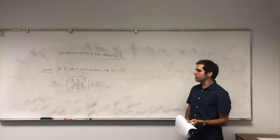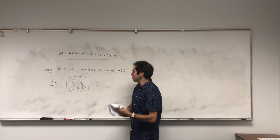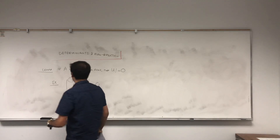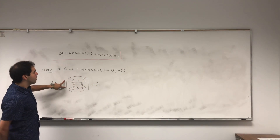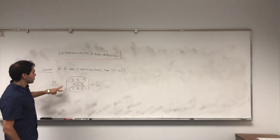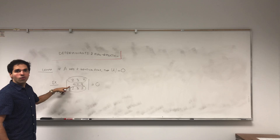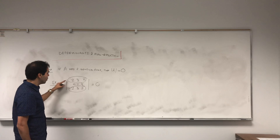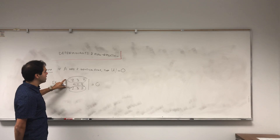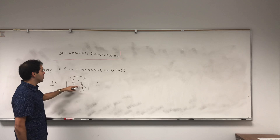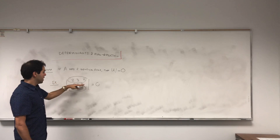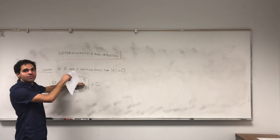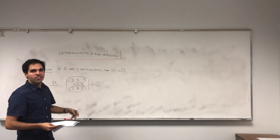The proof of this is really cute — it's just an induction proof. Assuming it's true for smaller matrices, if you have a big matrix with two identical rows, just expand it along any other row. When you expand out this determinant, you still have a smaller matrix with two identical rows, and by induction, this is zero.